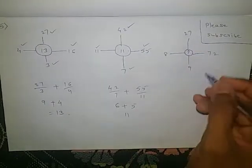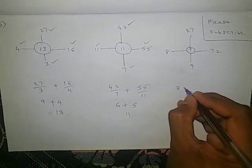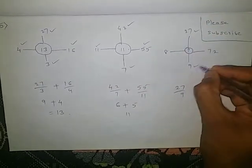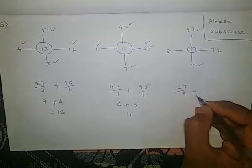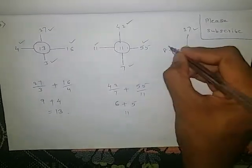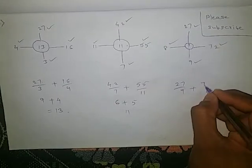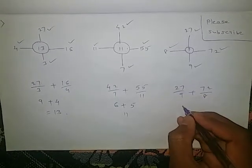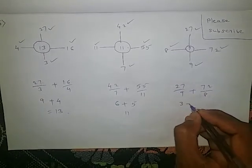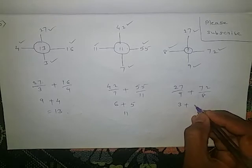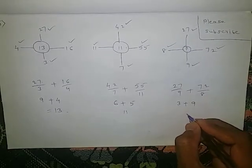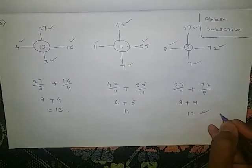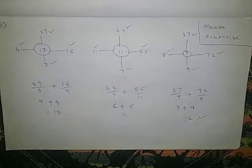Here also same: 27 by 9 plus 72 by 8. 27 by 9 is 3, plus 72 by 8 is 9. 3 plus 9 is 12. So the answer is 12.